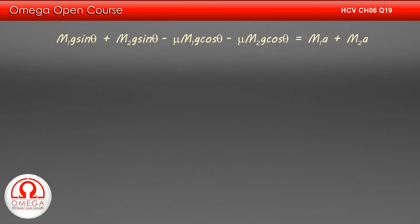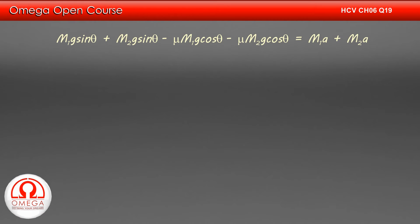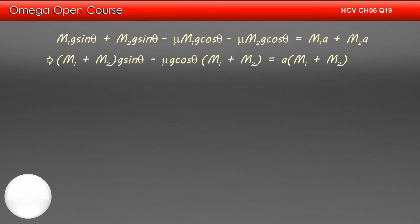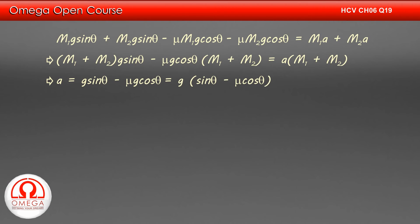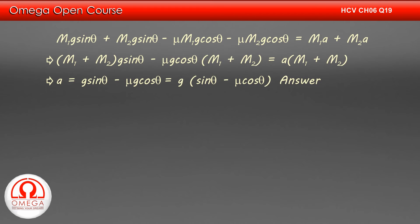Adding equations 1 and 2, we get M1g sin theta plus M2g sin theta minus mu·M1g cos theta minus mu·M2g cos theta equals M1a plus M2a. Rearranging, we get (M1 + M2)·g sin theta minus mu·g cos theta·(M1 + M2) equals a·(M1 + M2). Dividing both sides by (M1 + M2), we get a = g sin theta minus mu·g cos theta, or a = g(sin theta minus mu cos theta). This is the answer to the first part of the question.